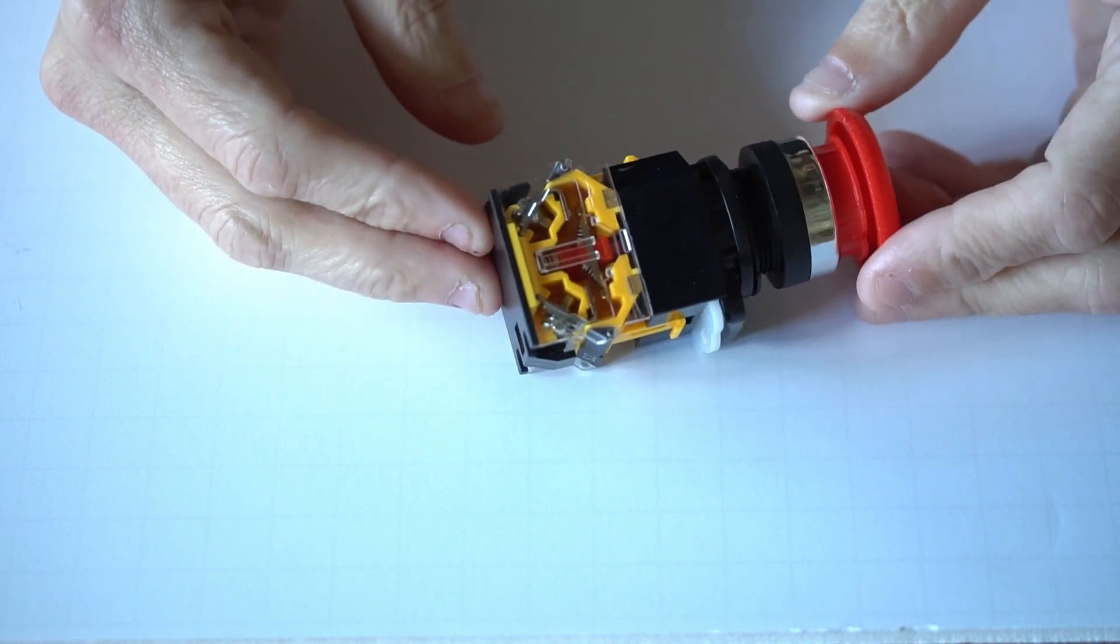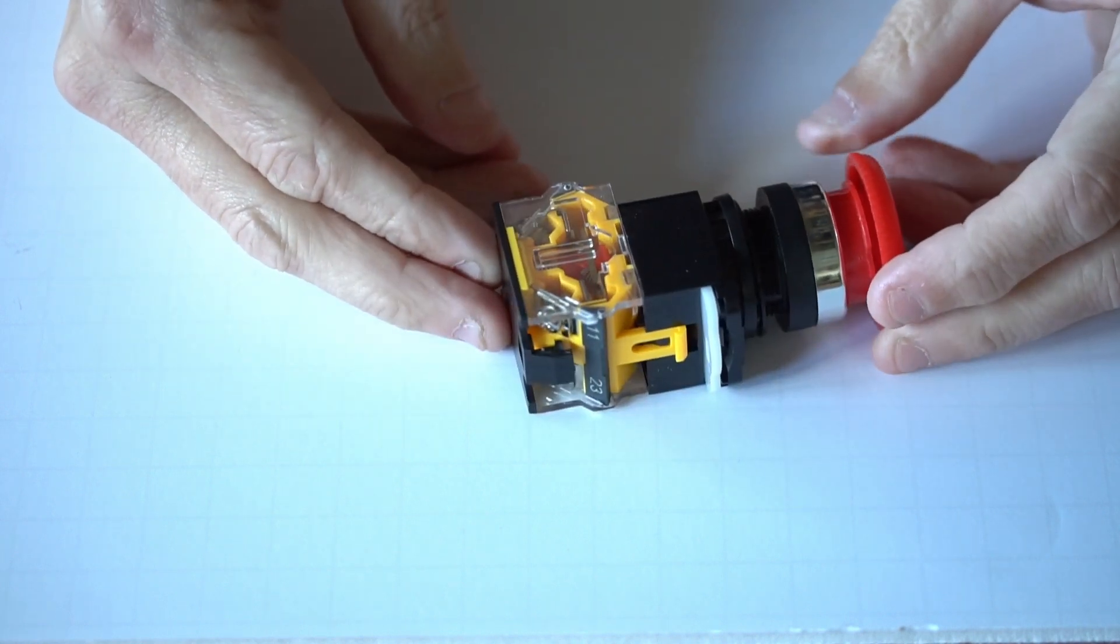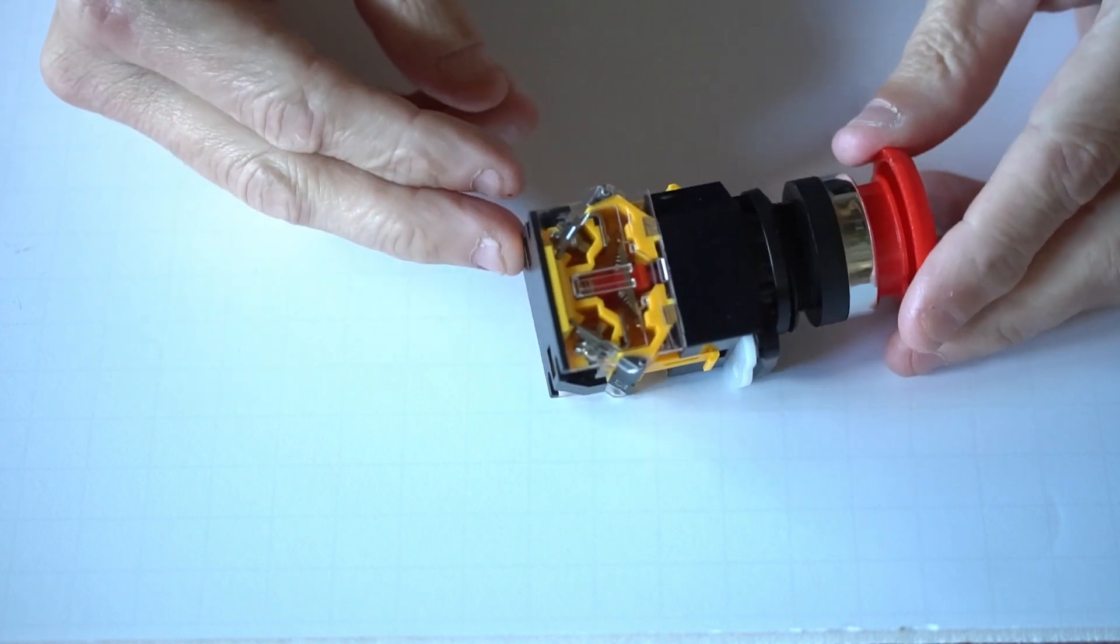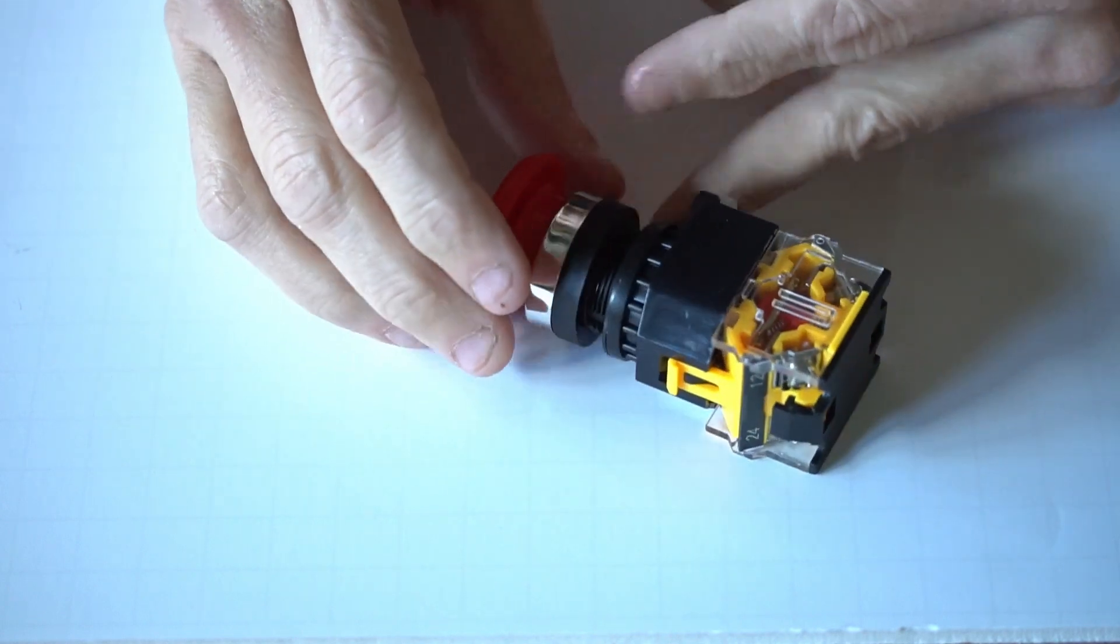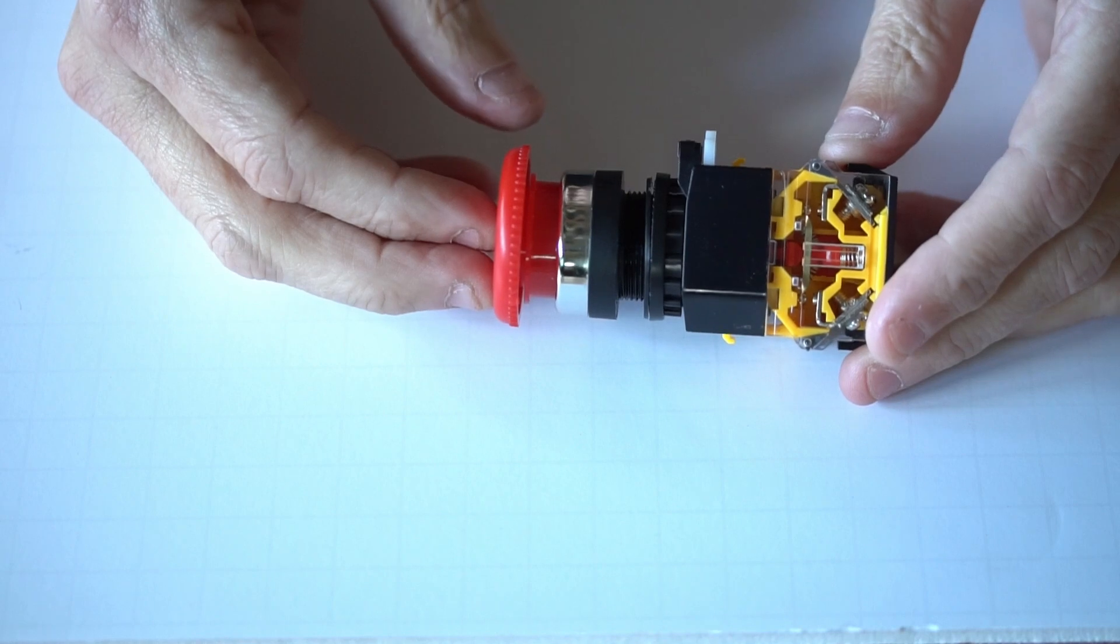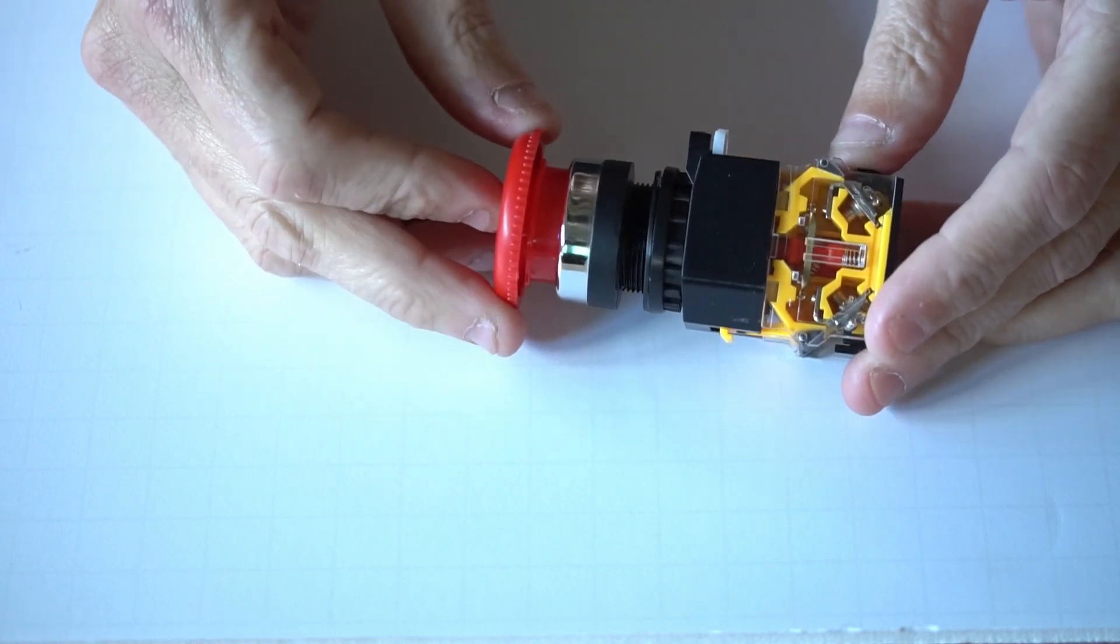This is one of our newer emergency stop switches that we sell on buildyourcnc.com. This e-stop switch can be completely disassembled for ease of installation on almost any control box for a CNC or industrial machine.